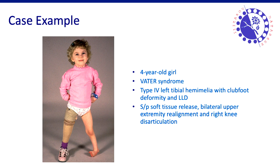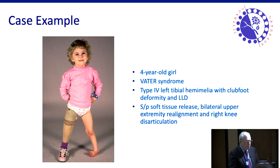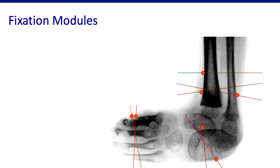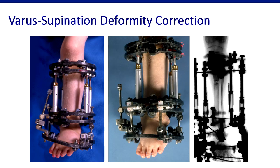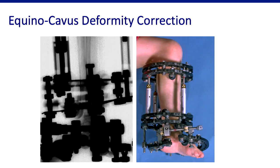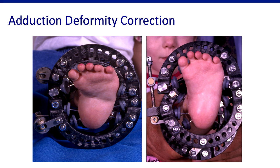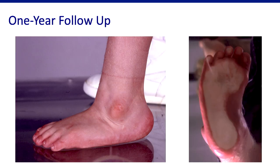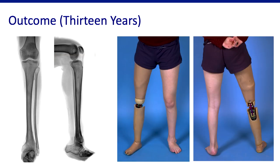Last example: a four-year-old girl with Warter syndrome, type four left tibial hemimelia with clubfoot deformity and limb length discrepancy, who already underwent amputation on the right leg. The treatment strategy stabilizes the forefoot, hindfoot, and tibia, then pushes and pulls segments of the foot in different directions to correct deformity — correcting varus, supination, pronation, equinus, and adduction. All hinges used are unconstrained hinges. This is her one-year follow-up radiographically, and her 13-year follow-up showing the foot remained in position.